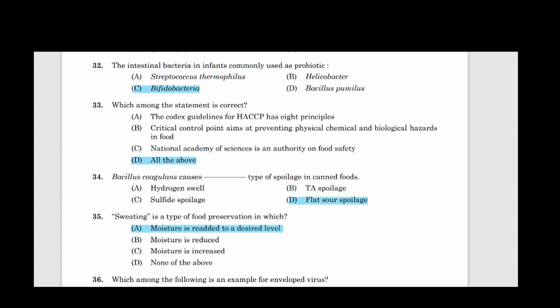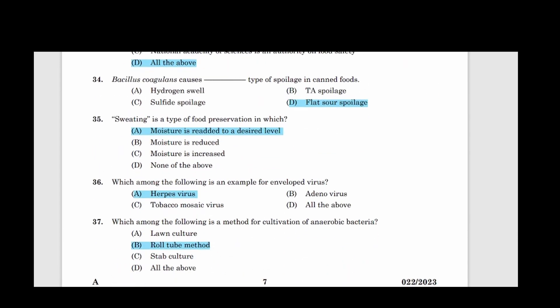Question thirty-three: Which among the statement is correct? Answer option D, All the above. Question thirty-four: Bacillus coagulans cause dashed type of spoilage in canned foods? Answer option D, Flat sour spoilage. Thirty-five: Sweating is a type of food preservation in which answer option A, Moisture is re-added to a desired level. Question thirty-six: Which among the following is an example for enveloped virus? Answer option A, Herpes virus. Thirty-seven: Which among the following is a method for cultivation of anaerobic bacteria? Answer option B, Rolled tube method.